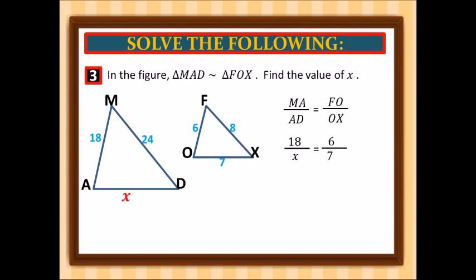Again, we are going to cross multiply. 18 times 7 gives us 126, and x times 6 gives us 6x. Divide everything by 6. 126 over 6 gives us 21. This means side AD is 21.